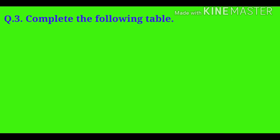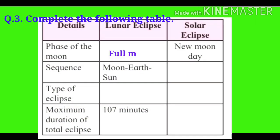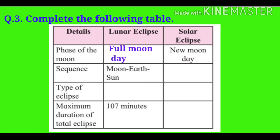Question number three: Complete the following table. Lunar eclipse — Phase of the moon: full moon day. Sequence: the moon, the earth and the sun. Type of eclipse: total and partial. Maximum duration of total eclipse: 107 minutes.